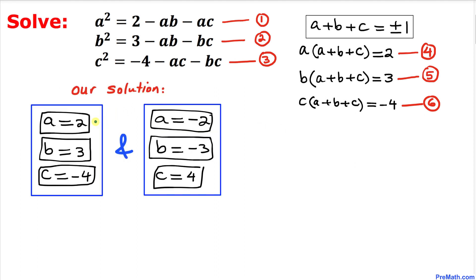So we have two sets of solutions. The first set is a = 2, b = 3, c = −4. The second set is a = −2, b = −3, c = 4. Thanks for watching and please don't forget to subscribe to my channel for more exciting videos.